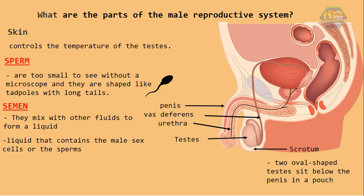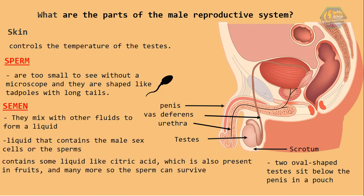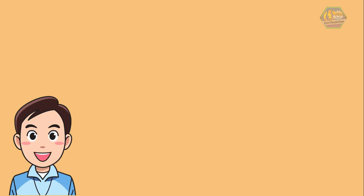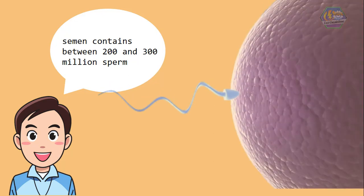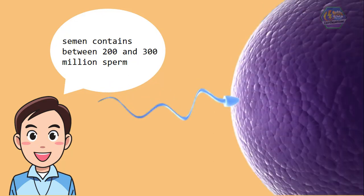Semen is a liquid that contains the male sex cells, or the sperms. It also contains some liquids like citric acid, which is also present in fruits, and many more — so the sperm can survive. Did you know that semen contains between 200 and 300 million sperm? But usually, out of millions of sperms, only one can unite with the female sex cell. The others die.